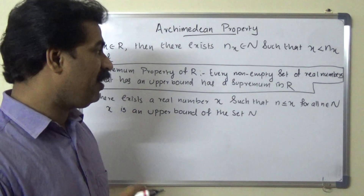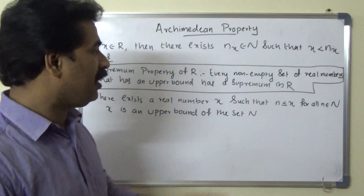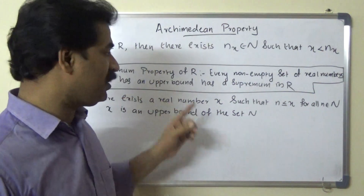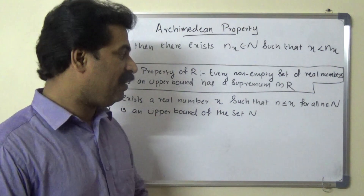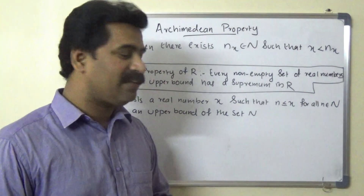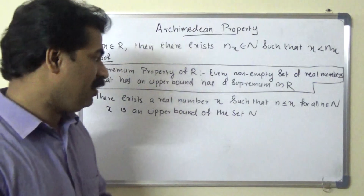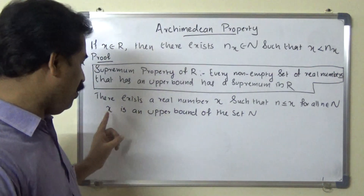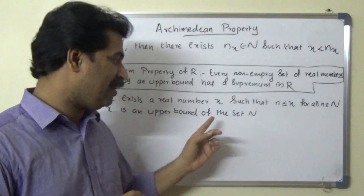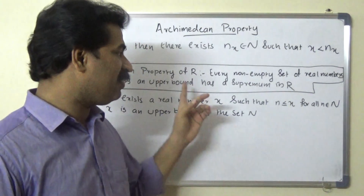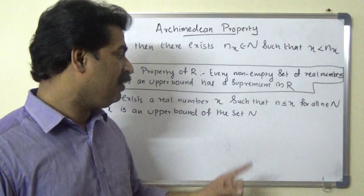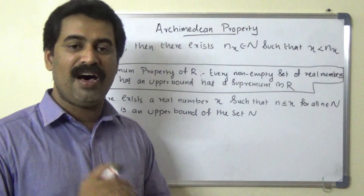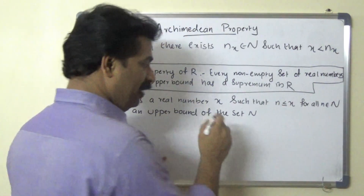So here we use the supremum property of R: every non-empty set of real numbers that has an upper bound has a supremum. Capital N is a non-empty subset of R, and capital N has an upper bound — small x is an upper bound of capital N. By the supremum property of R, capital N has a supremum in R.